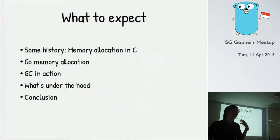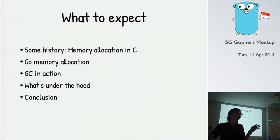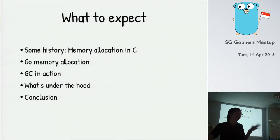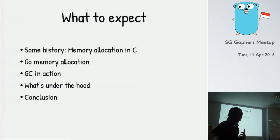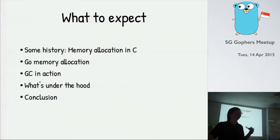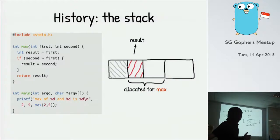What to expect from the talk: first I'll go over some historical information, like how memory allocation was done in C, and then we'll look at how it's done in Go. That's the reason why we need the garbage collector in Go. Then we'll see it in action and see some consequences of the garbage collector.